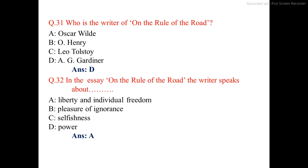Question number 32. In the essay On the Rule of the Road, the writer speaks about — the correct option is option A: liberty and individual freedom.